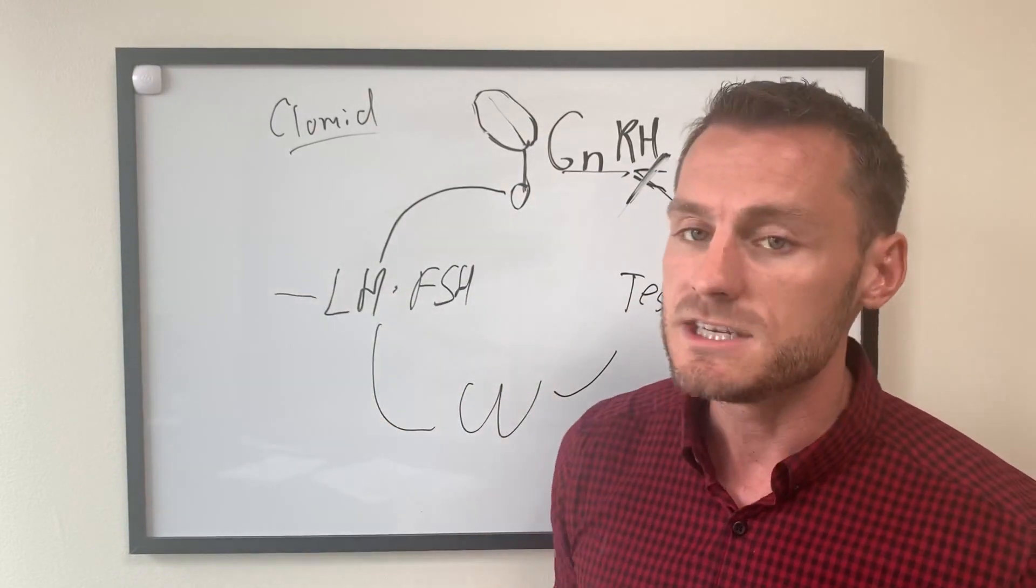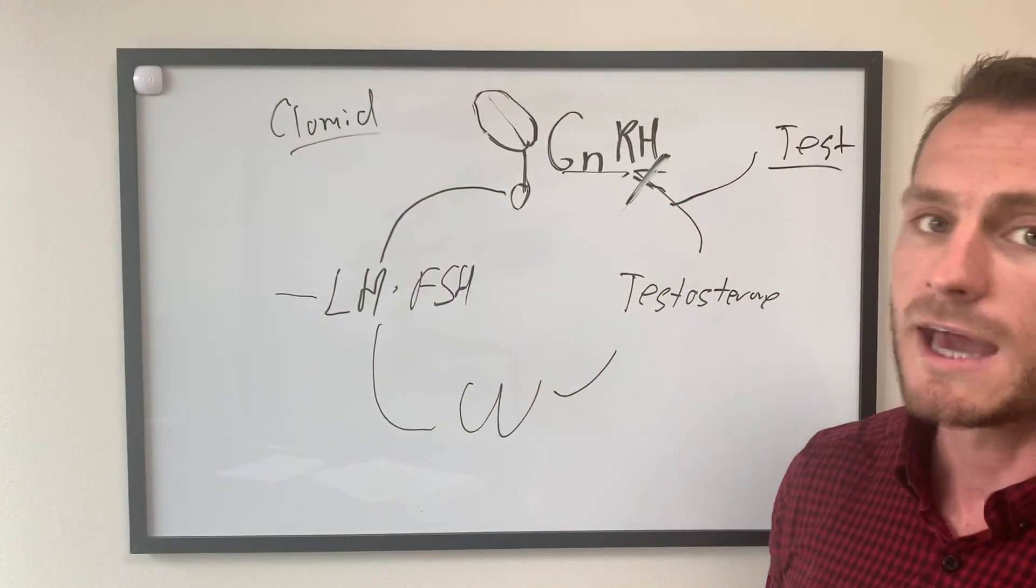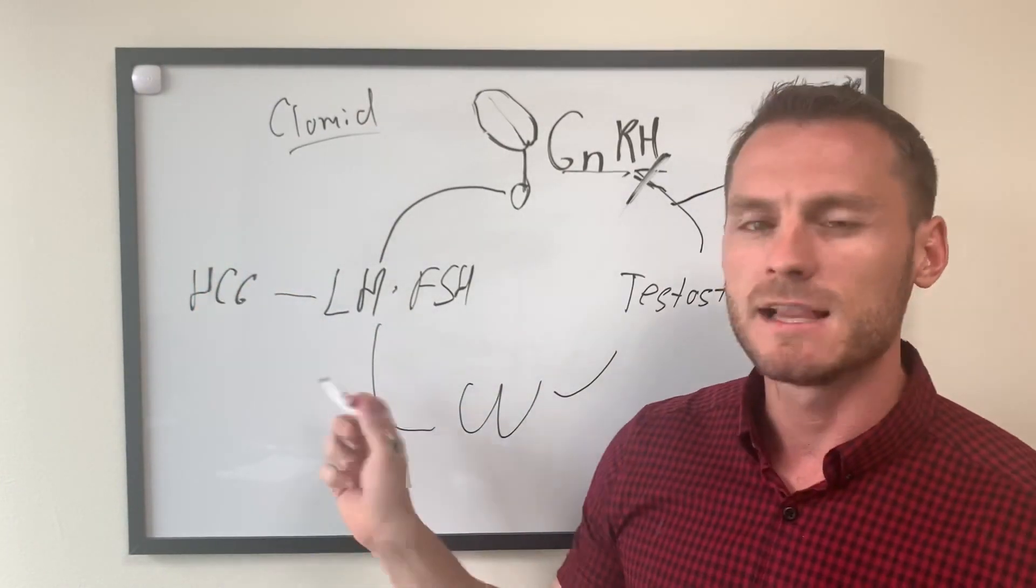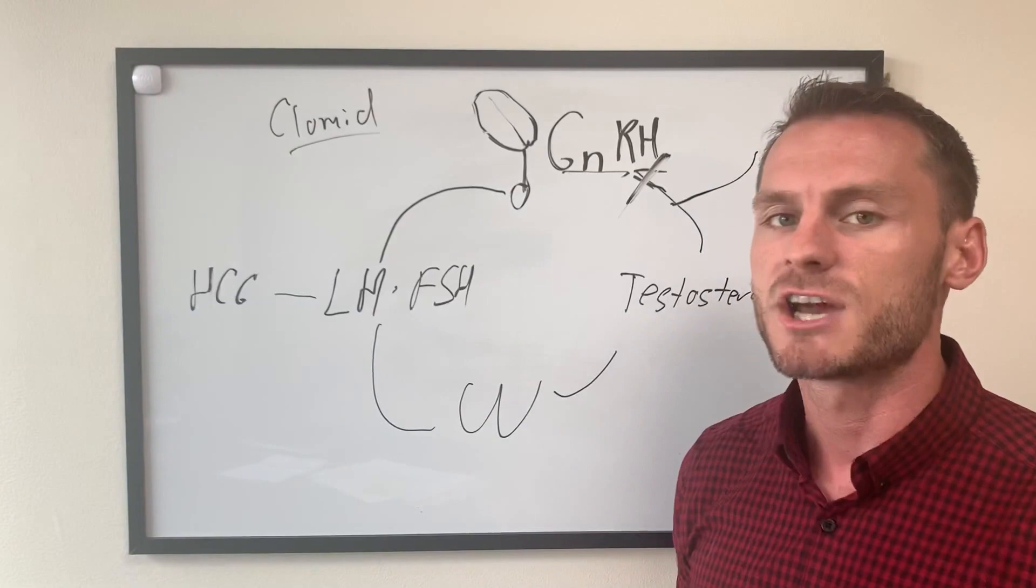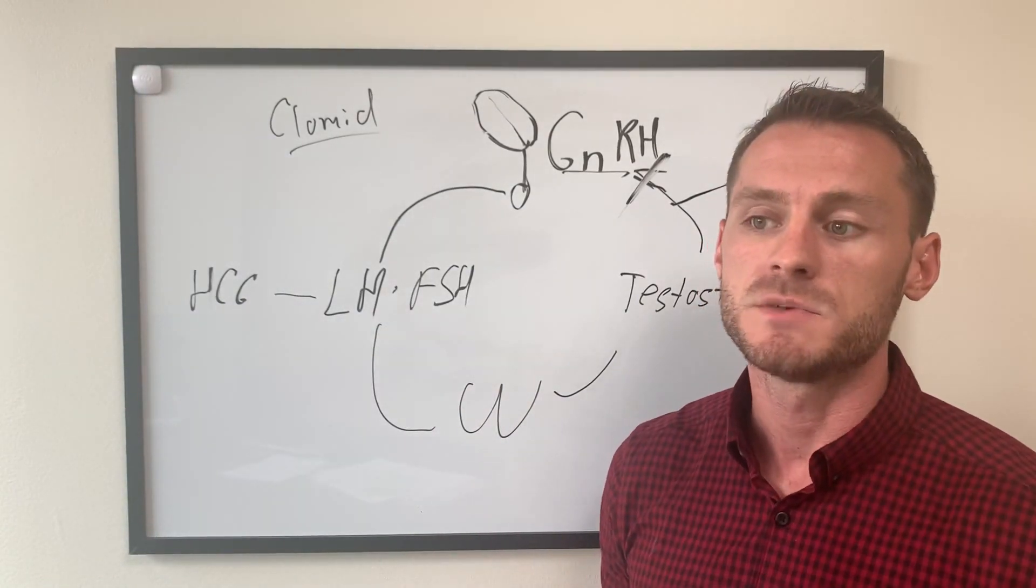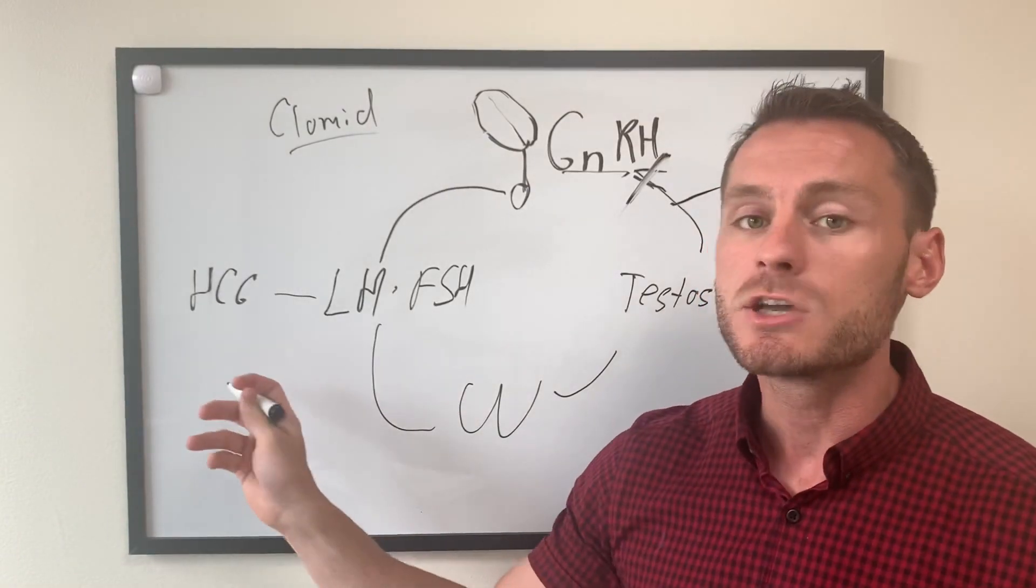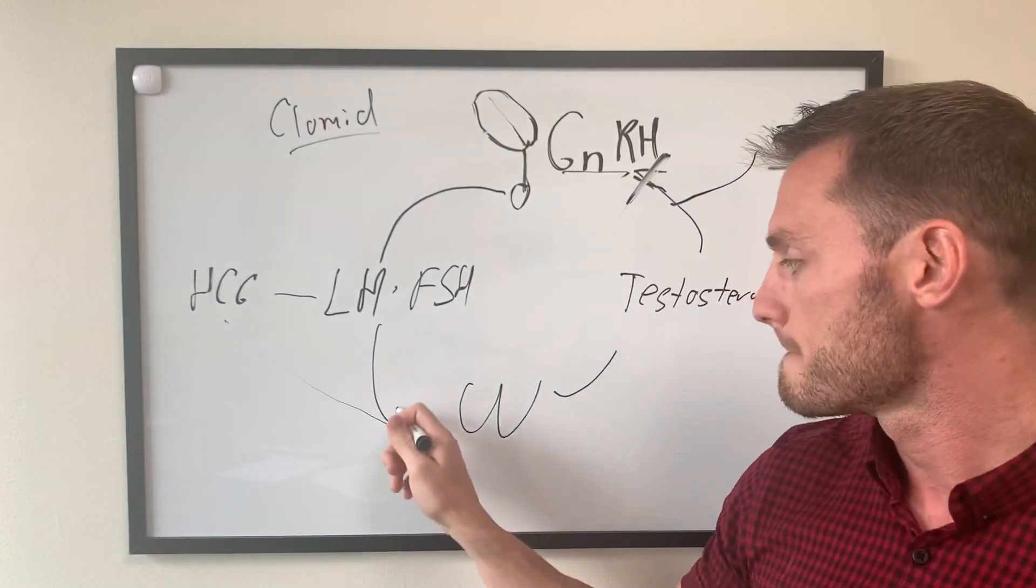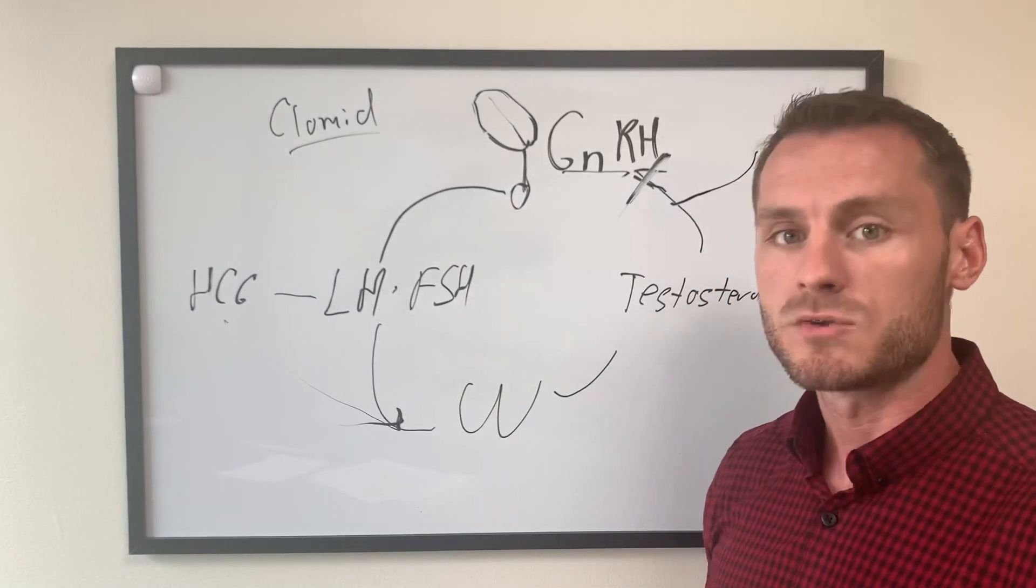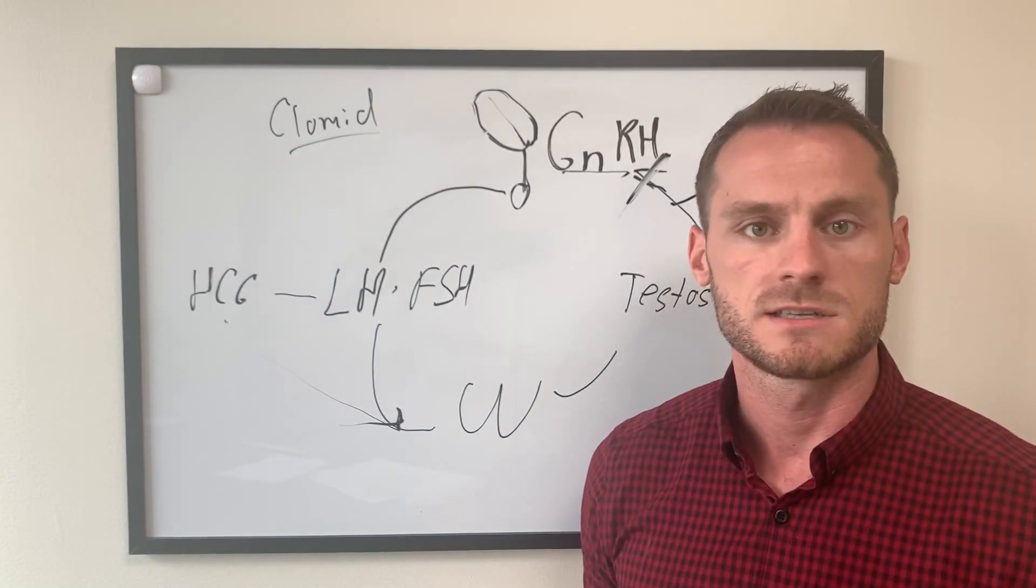Now, HCG, human chorionic gonadotropin, mimics LH. So when we give our body an injection of HCG, the body has a hard time telling the difference between that and LH. So HCG goes into the body and does what LH does. So that will increase fertility and increase the testicular size.